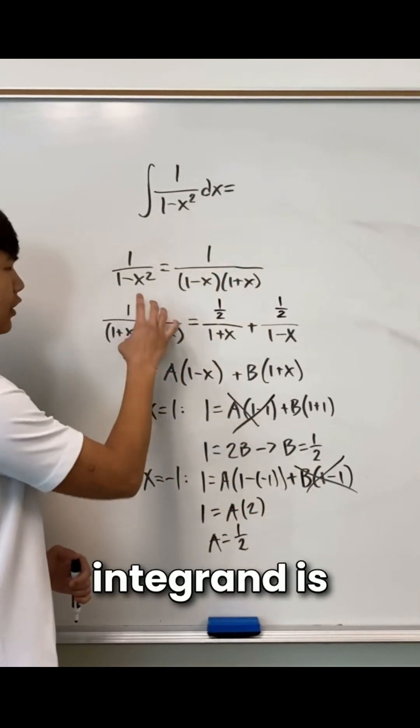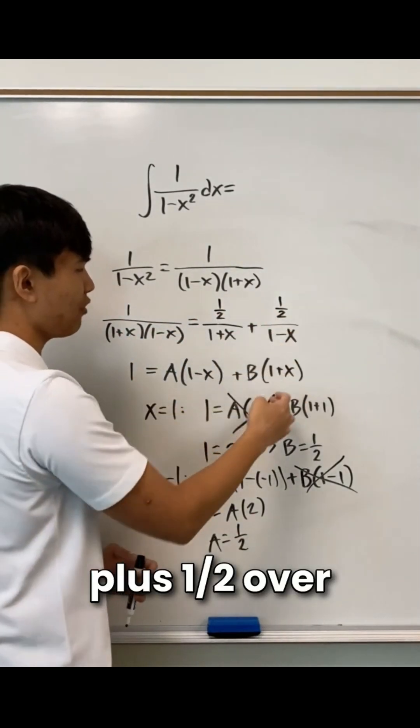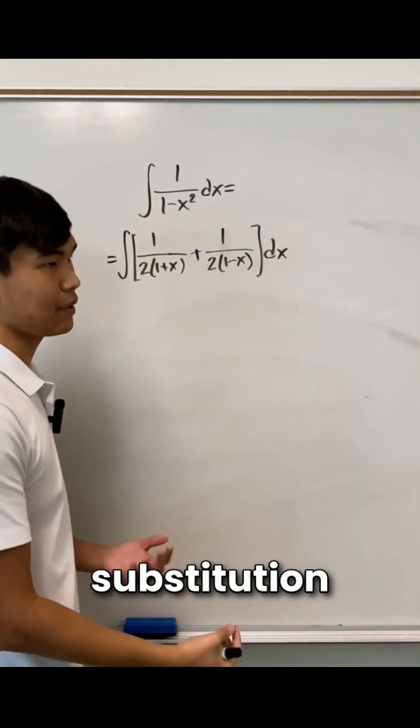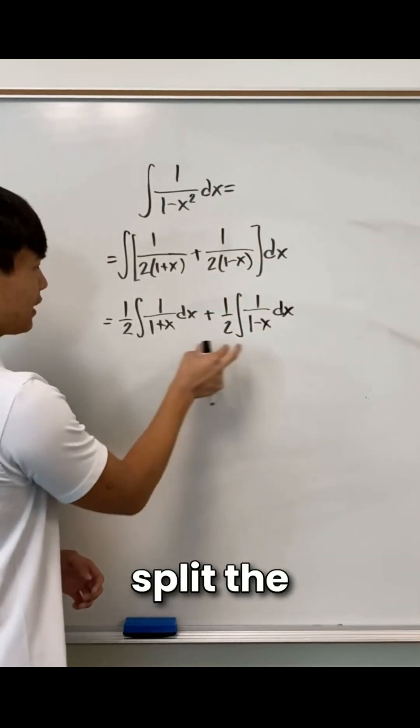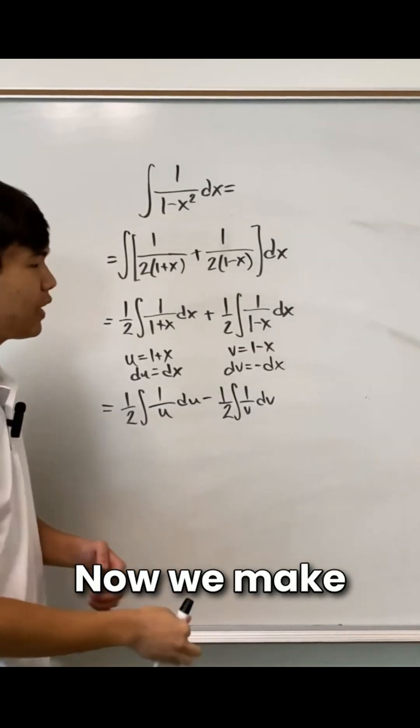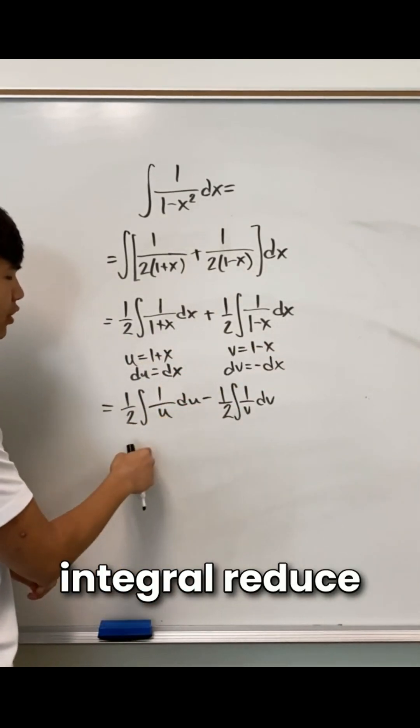Now we can say that our integrand is equal to 1 half over 1 plus x plus 1 half over 1 minus x. We're going to make that substitution in our integral. Here we can split the integrals and pull out the 1 halves. Now we make two separate substitutions to make our integral reduced to this.